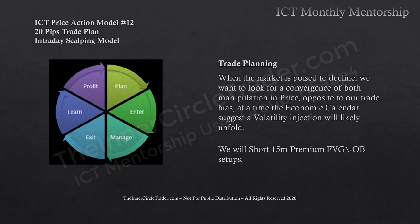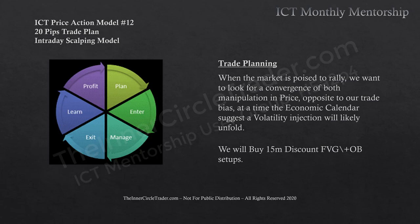For trade planning when the market is poised to decline, we look for convergence of both manipulation and price opposite to our trade bias at a time the economic calendar suggests a volatility injection will likely unfold. We will short 15-minute premium fair value gaps with bearish order blocks. When the market is poised to rally, we look for convergence of manipulation and price opposite to our trade bias and buy 15-minute discount fair value gaps plus bullish order block setups.